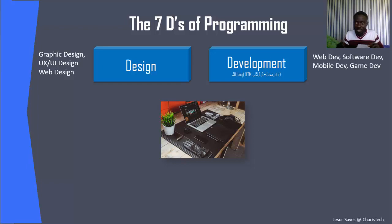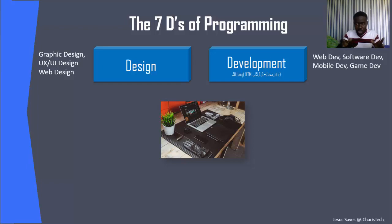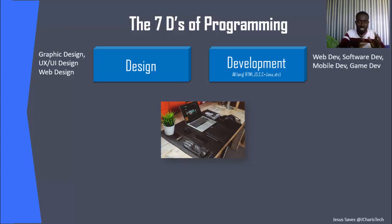For software development, almost all languages can be used — you have Java, C, Swift, even JavaScript. For game development there are several languages like C and C#. The field of development pays well and includes many roles: developers, engineers, and architects — all still under the field of development.